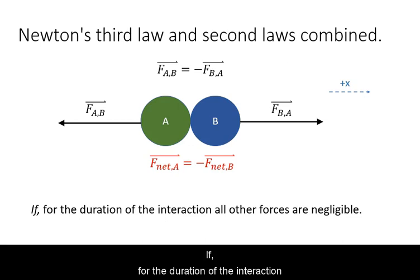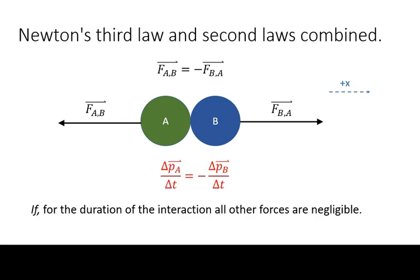If for the duration of the interaction between the two objects, all other forces can be neglected, then we can combine Newton's third and second laws such that the rate of change of momentum of one object will equal the negative of the rate of change of momentum.